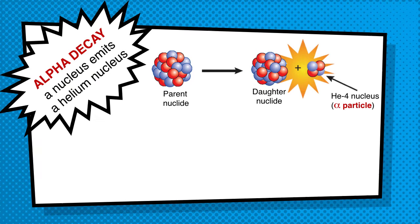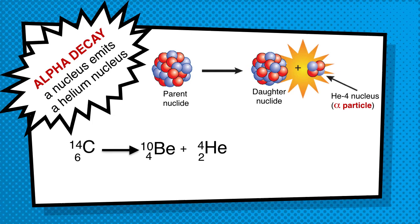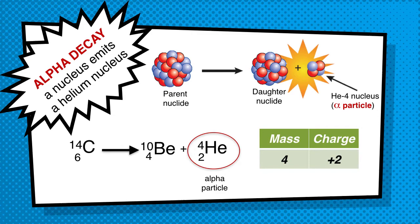Let's take a look at some examples. For alpha decay, the nucleus is going to give off a helium nucleus. You're going to have the parent nuclei break apart to give off a daughter nuclei, and then the helium-4 nucleus is the alpha particle. Notice that the top number is the mass, and the bottom number is the charge — so a mass of 4 and a charge of plus 2.